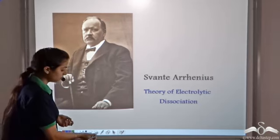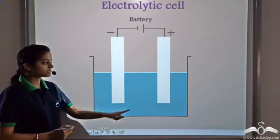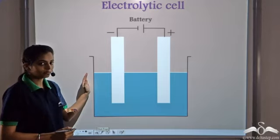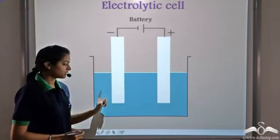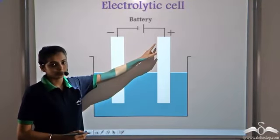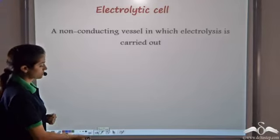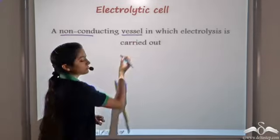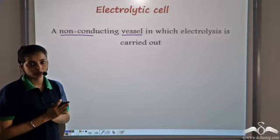In the laboratory, electrolysis takes place in this apparatus, which is known as an electrolytic cell. It consists of two electrodes, a solution, and the two electrodes are connected to a battery. This electrolytic cell consists of a non-conducting vessel in which electrolysis is carried out.